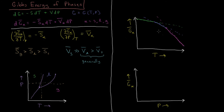This is how we get the different points along our phase diagram. Where the solid and liquid Gibbs energy curves meet is the melting point T_M, where the solid melts into liquid. Where the liquid and gas Gibbs energies are equal is the boiling point T_B, the temperature at which the liquid boils.